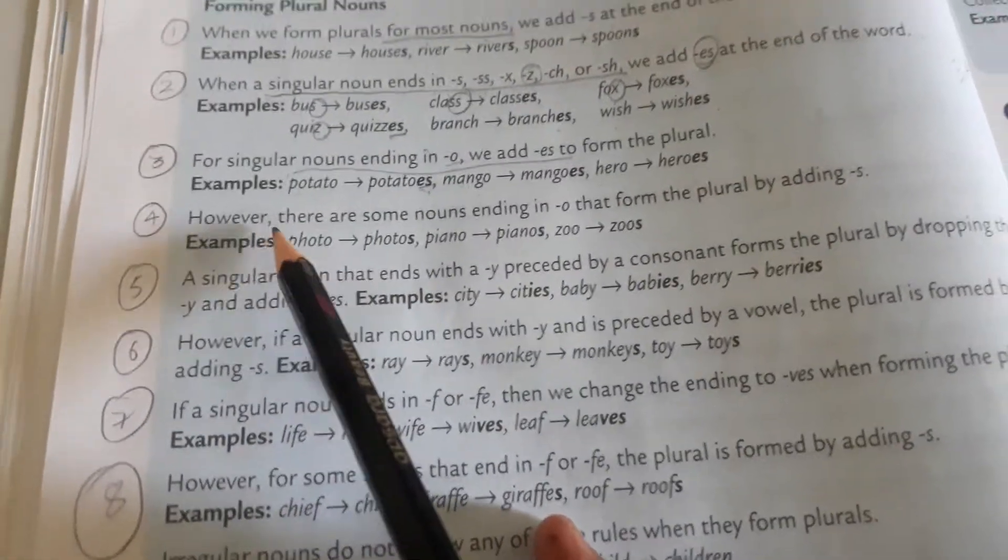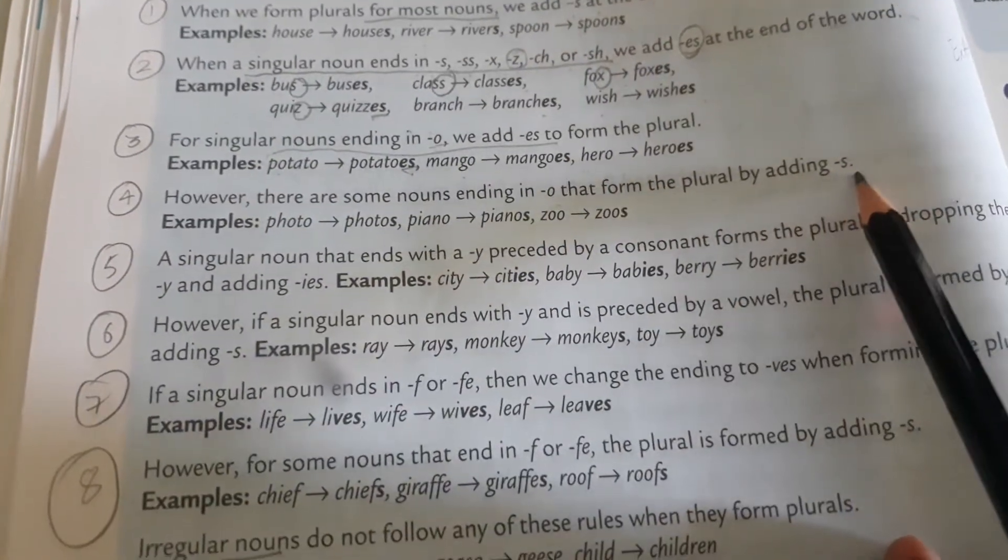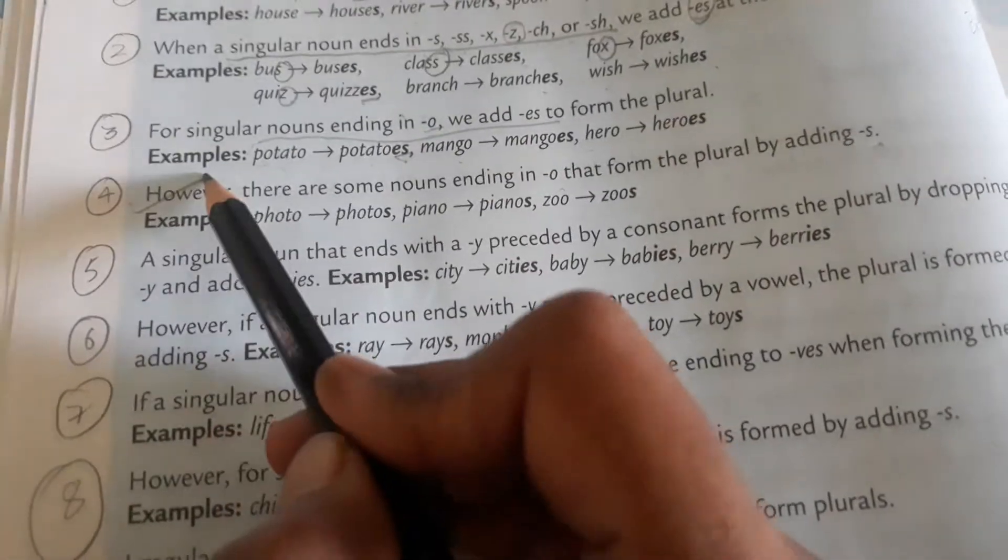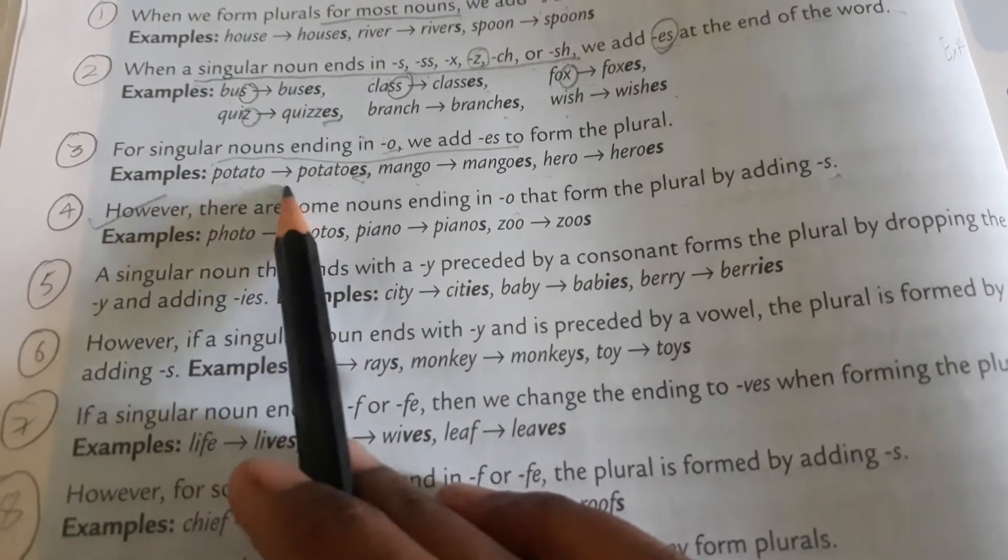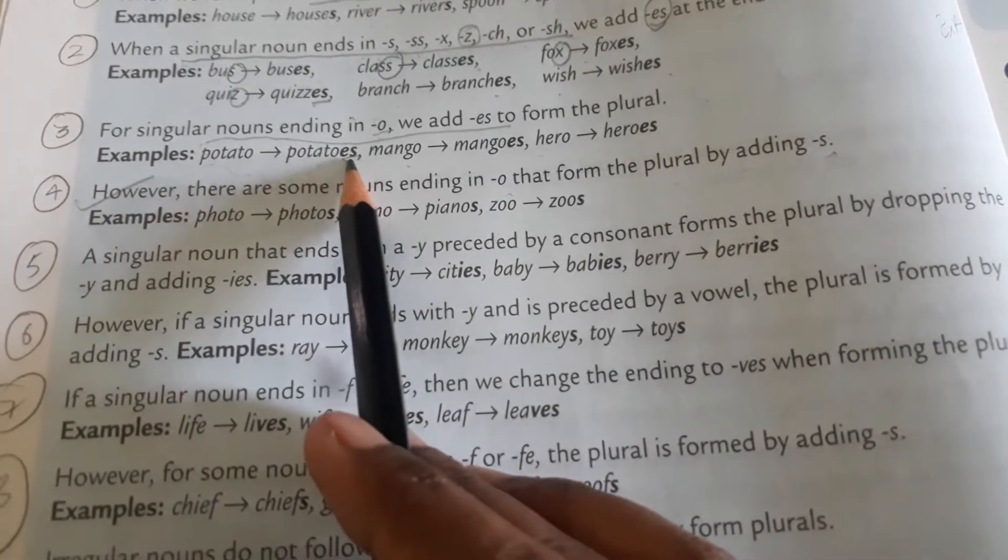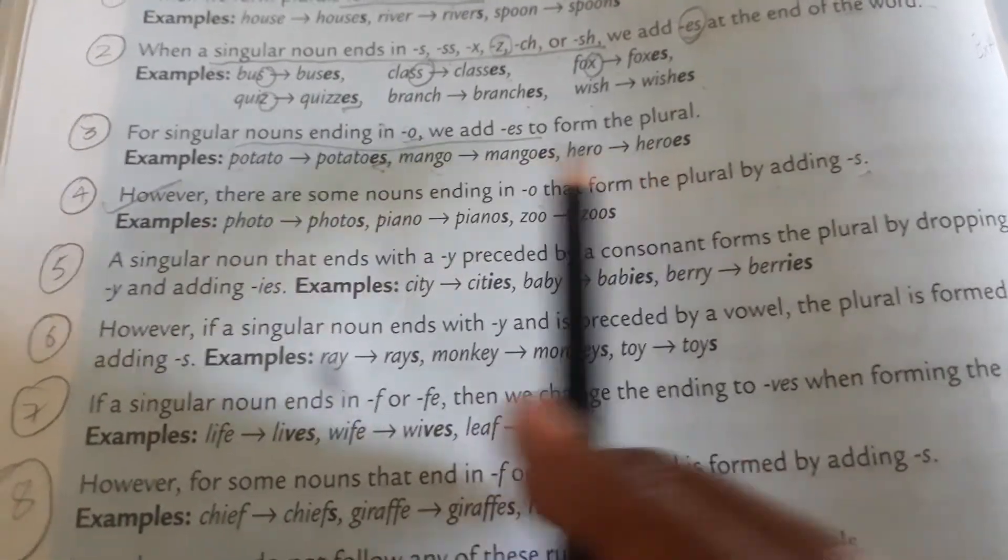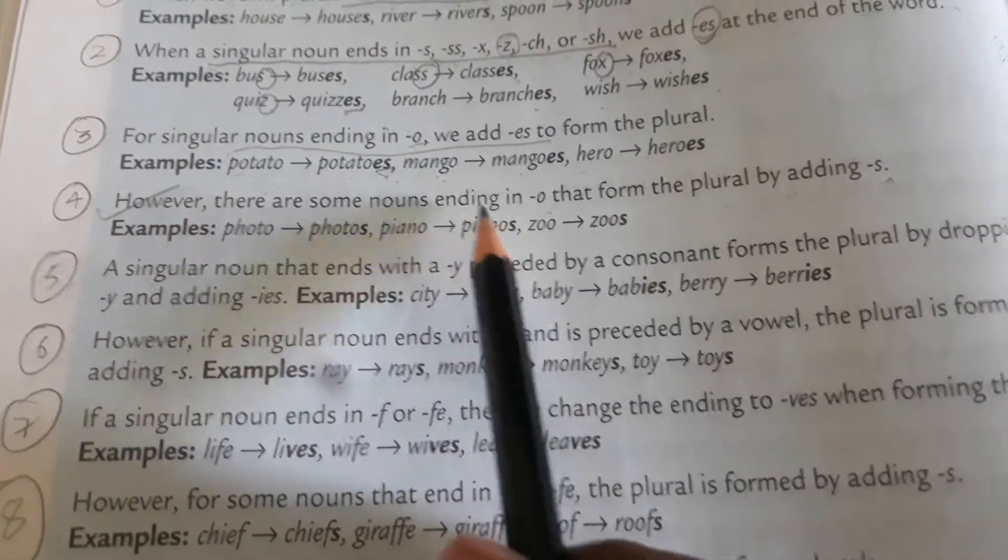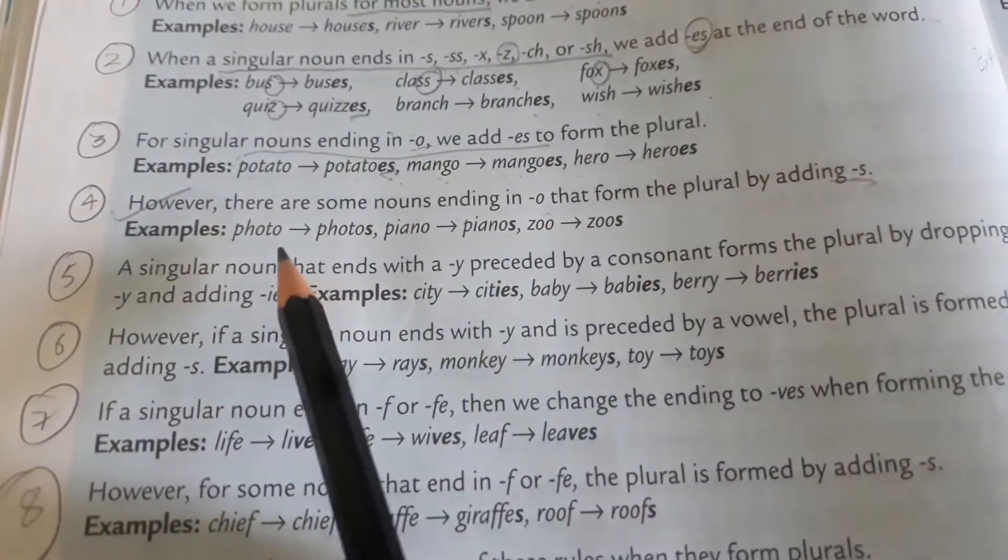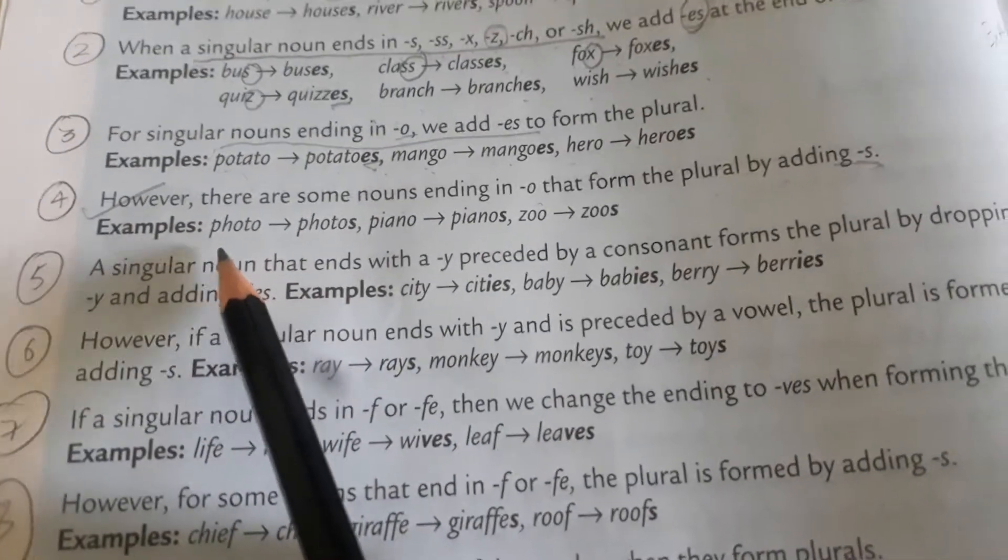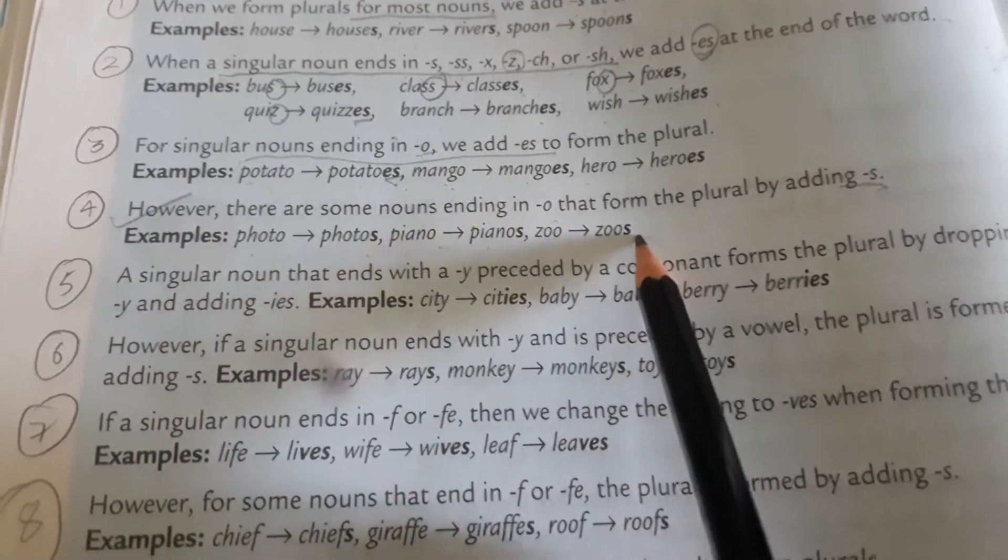Now in the fourth point, they are saying, however, there are some nouns ending in O that form plural by adding S. This is very important. Be careful.